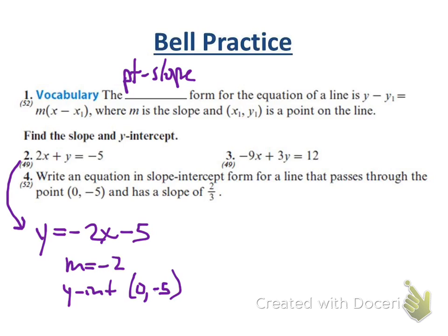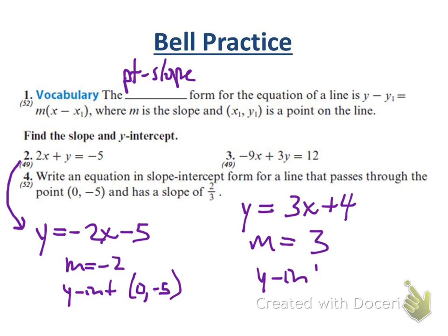Number three, Cooper? The slope is 3 and the Y-intercept is (0, 4). So if you solve for Y, you get Y equals 3X plus 4, because you add 9X to both sides and divide everything by 3. Again, the slope is 3 and the Y-intercept is (0, 4).